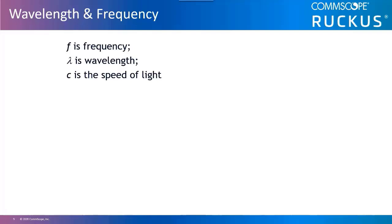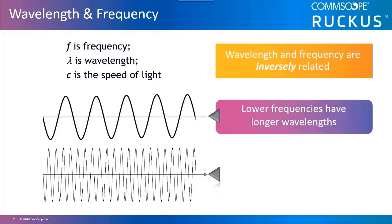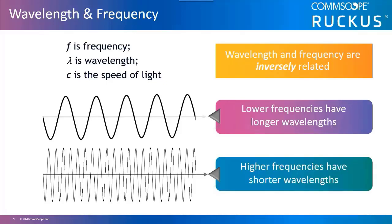Wavelength and frequency are inversely related. Higher frequencies have shorter wavelengths. If the wave cycles more times per second, it is because it is a shorter wavelength that must travel the same distance in the same amount of time as a longer wavelength. If the wave cycles fewer times per second, it is because it is a longer wavelength that must travel the same distance in the same amount of time as a shorter wavelength.